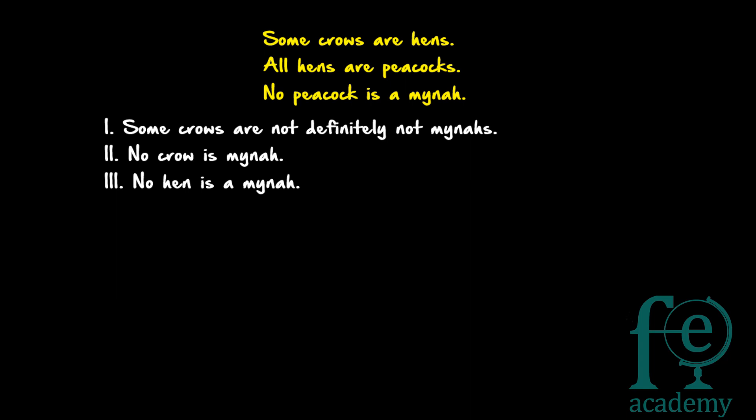So let's try to solve this. The given statements are: some crows are hens, all hens are peacocks, no peacock is a mina. We have to start with the all statement — that is the key. You have to first start drawing from the all statement. So all hens are peacocks.